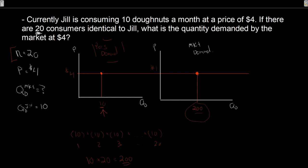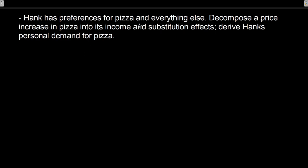Let's take a look at the last and final example. We have Hank. Hank has preferences for pizza and everything else — that's what he's split between: pizza and all the other goods he's interested in. We want to decompose a price increase in pizza into its income and substitution effects, and we want to derive Hank's personal demand for pizza.